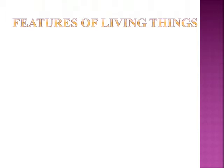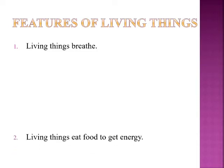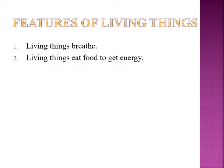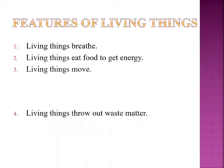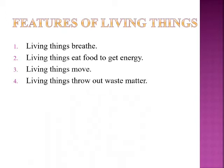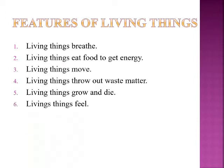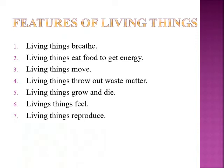The third and most important topic of this chapter is the features of living things. There are seven main features of living things. Firstly, living things breathe. Second, living things eat food to get energy. Third, living things move. Fourth, living things throw out waste matter. Fifth, living things grow and die. Sixth, living things feel. And the seventh one, living things reproduce. We are going to learn about all these features in detail in the next slides.